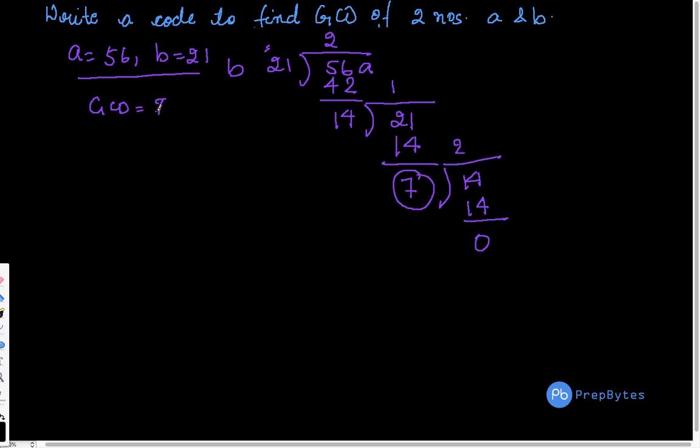Now if you observe something here, initially my B was 21, A was 56. What happened here? My latest A is equivalent to my previous B. So A is equal to previous B.